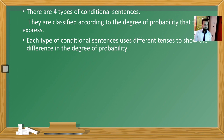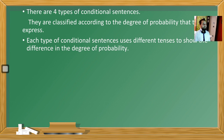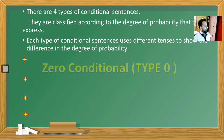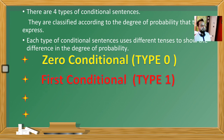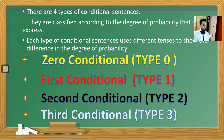There are four types of conditional sentences. They are classified according to the degree of probability that they express. Each type uses different tenses to show the difference in the degree of probability. Dört farklı condition yapımız var; bunlar olasılık derecelerine göre sınıflandırılıyor. The four types are: zero conditional, first conditional, second conditional, and third conditional. Today we are going to study the two easiest ones: zero conditional and first conditional.